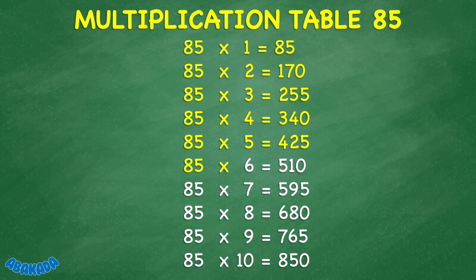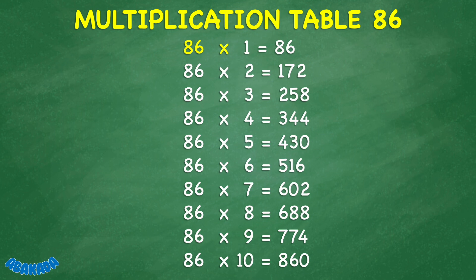85 times 6 equals 510. 85 times 7 equals 595. 85 times 8 equals 680. 85 times 9 equals 765. 85 times 10 equals 850. 86 times 1 equals 86. 86 times 2 equals 172.